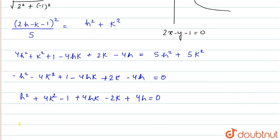Now, we will replace h,k with x,y. So, this will become x squared plus 4y squared minus 1 plus 4xy minus 2y plus 4x equals 0.